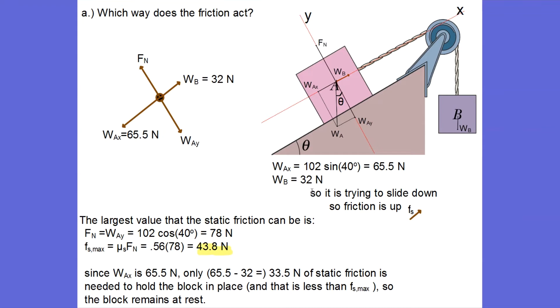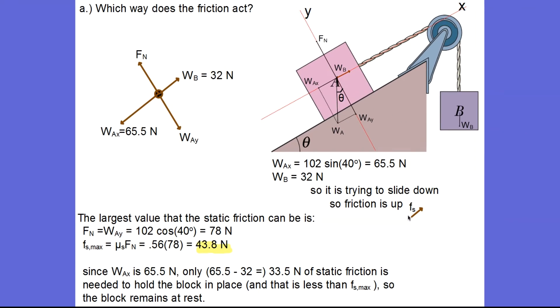Now I don't know which way the friction is acting, so I have to look at the forces in the x direction. In a tug of war so to speak between those two forces, which way does the block want to move? Well, we see that the x component of A is bigger than the weight of B, so that means the block wants to slide down the ramp. Friction is going to oppose that of course, so that means my frictional force then is going to be up the ramp.